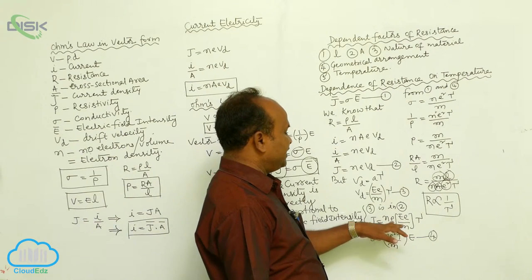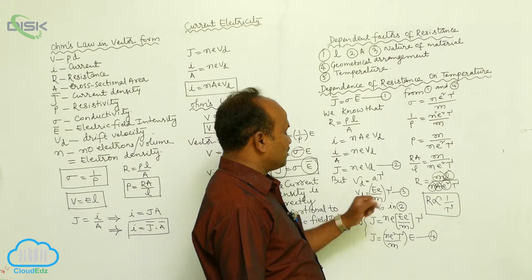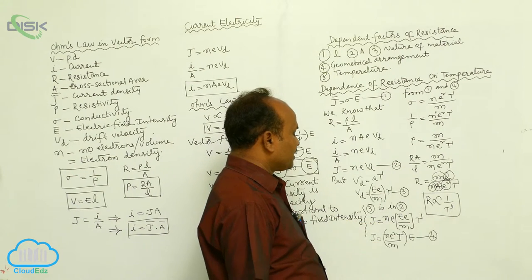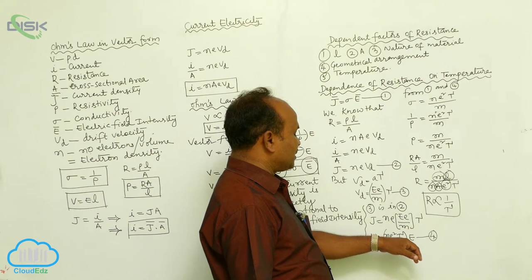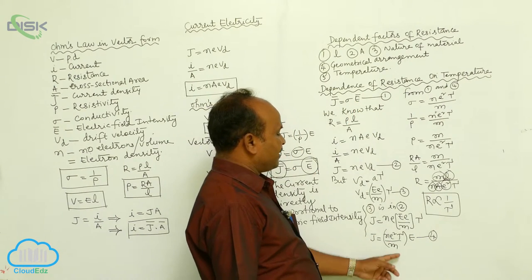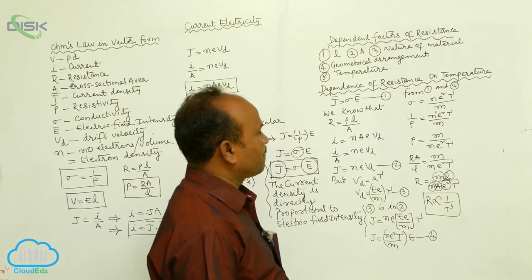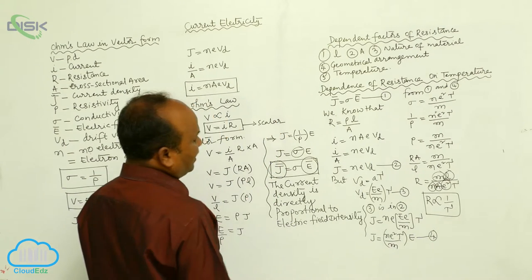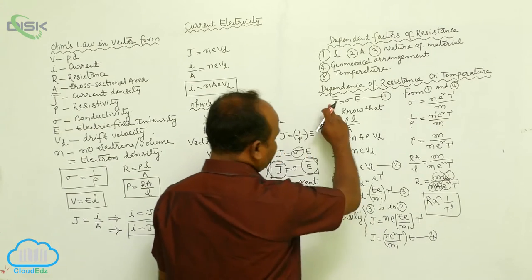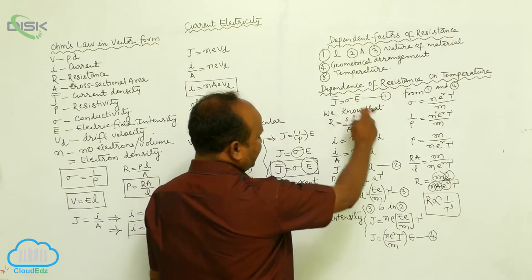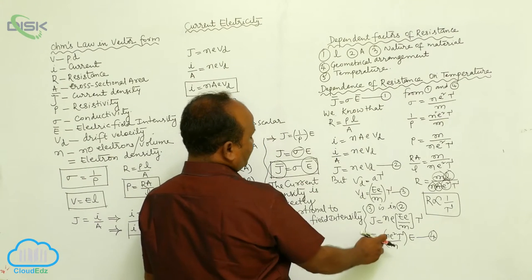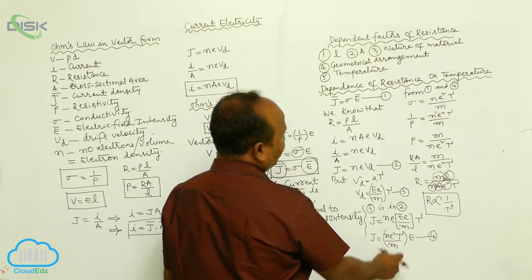Therefore J equals n e v_d, and substituting v_d equals e E by m into tau, we get J equals n e squared tau by m into E. Comparing the first equation J equals sigma E with this fourth equation, conductivity sigma equals n e squared tau by m.